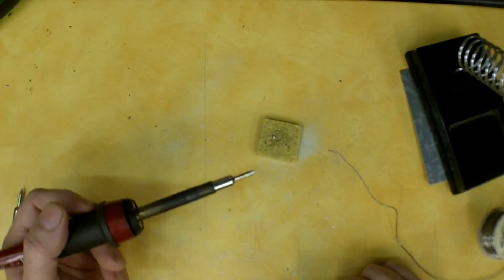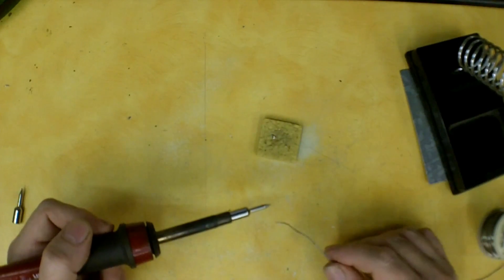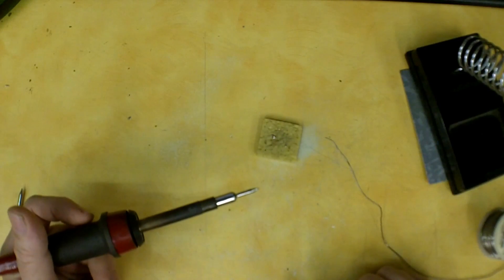That bit of solder on there will protect the tip. The next time you break it out to use it, get it hot, clean the tip off, tin it with some fresh solder, and go to work.